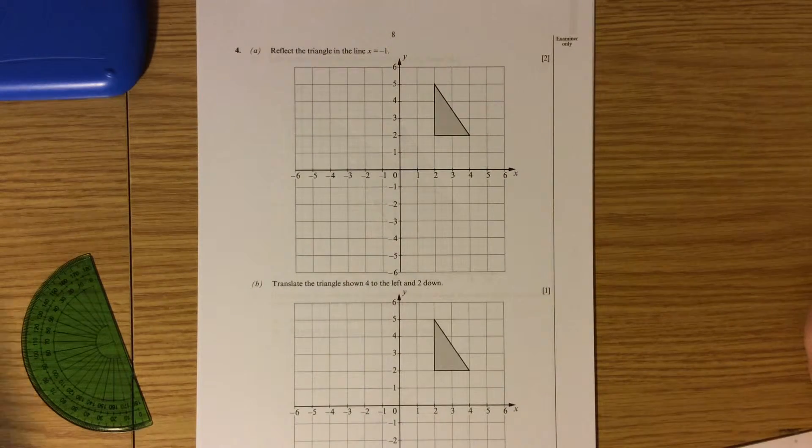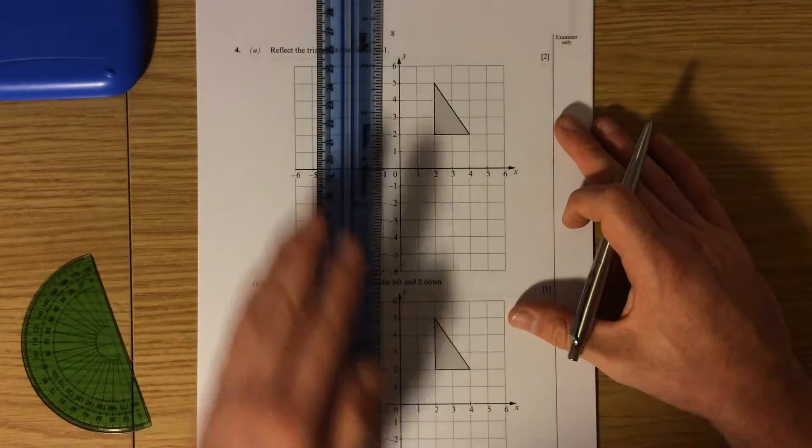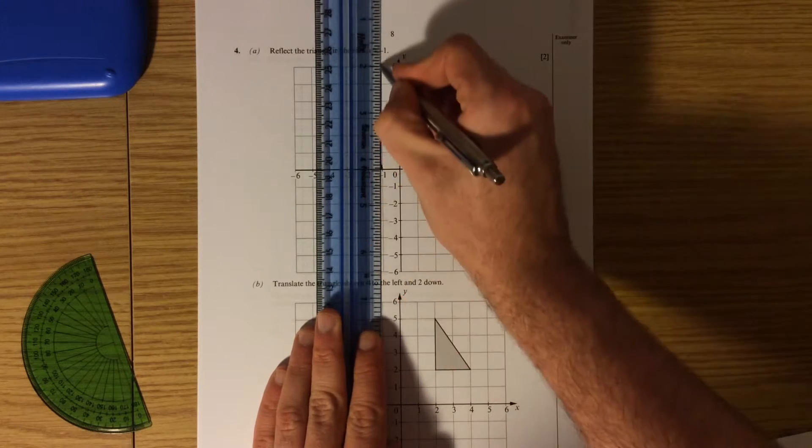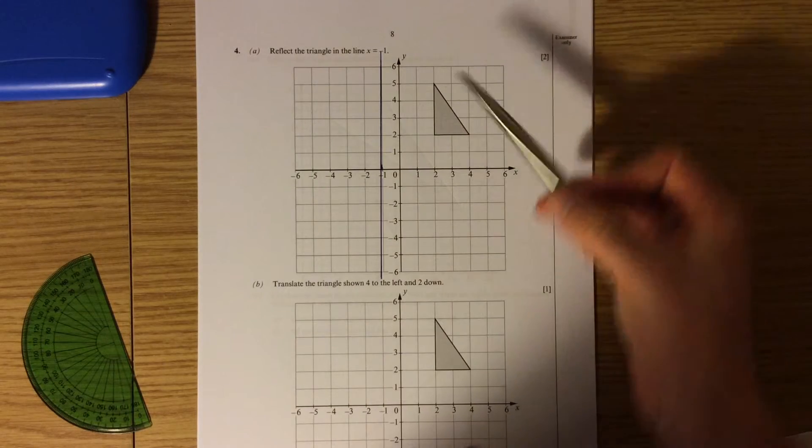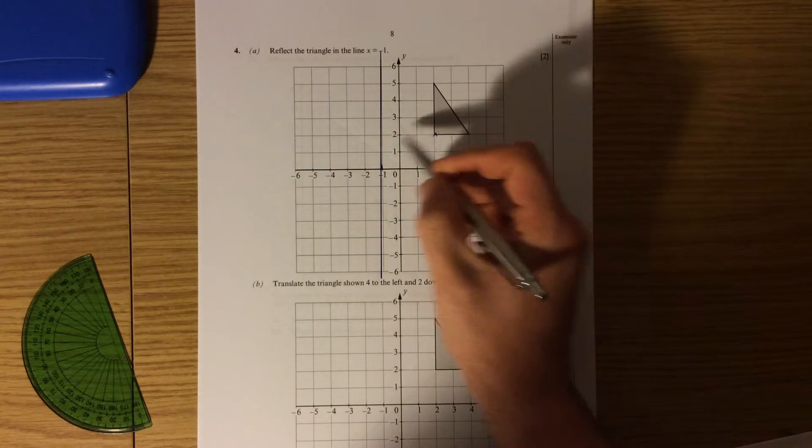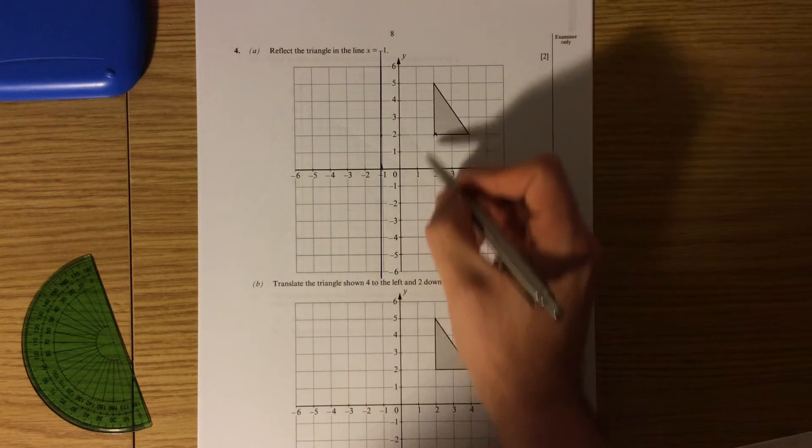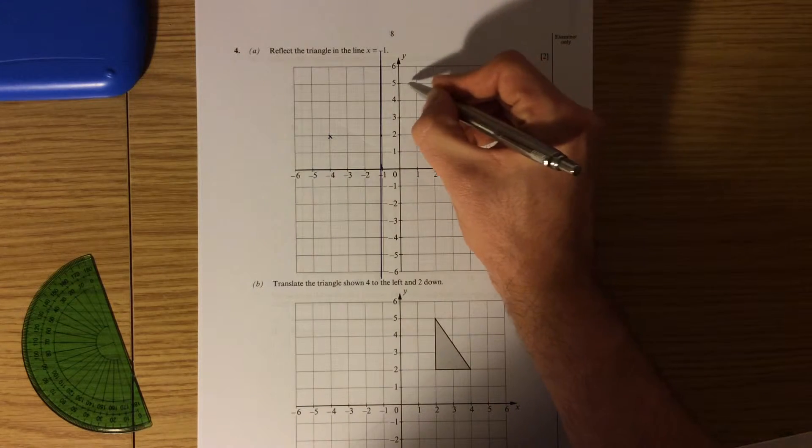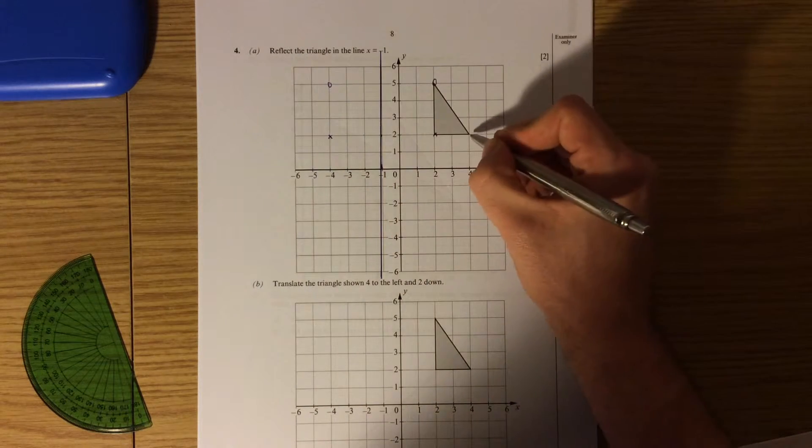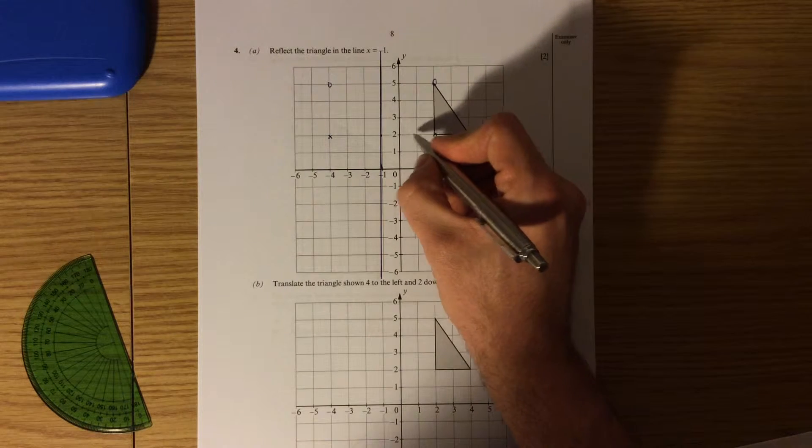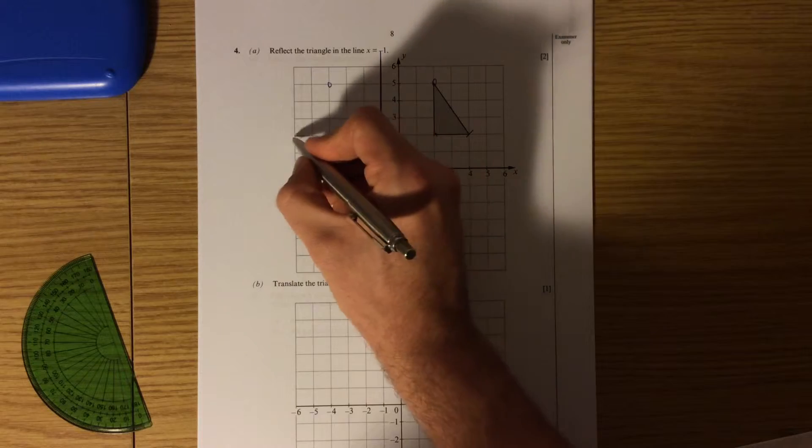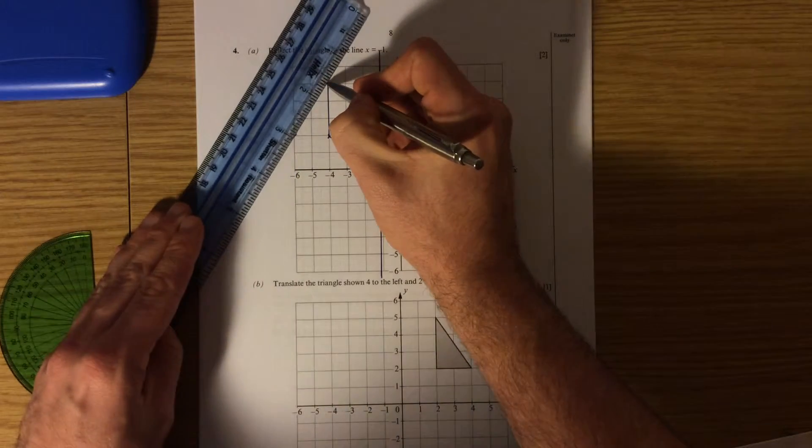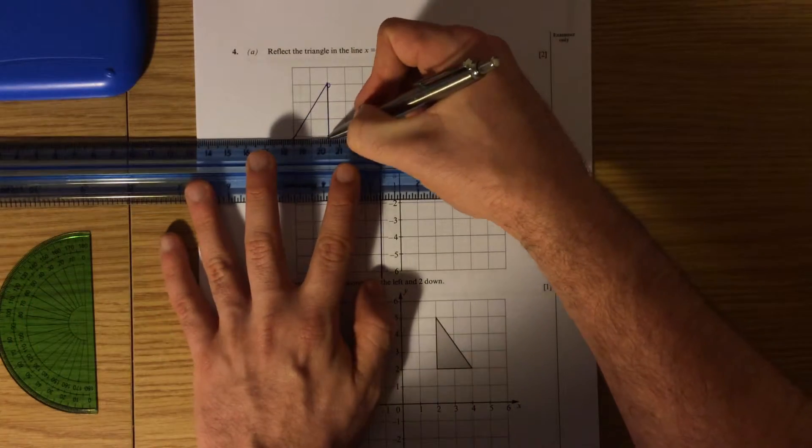Question 4a, reflect the triangle in the line x equals minus 1. This line here is the line x equals minus 1 because every single point on that line has an x value of minus 1. Now to reflect I'm going to count how many squares from each of these points I need to go to get to the line, and then I'm just going to go again the same distance away. So it's 1, 2, 3 and then 1, 2, 3, so that becomes that corner. This point is 1, 2, 3, 1, 2, 3, and then this point here is 1, 2, 3, 4, 5, so it becomes 1, 2, 3, 4, 5. And that gives me the location of my new triangle. And then I'm simply going to join up those three points to create the reflected shape.